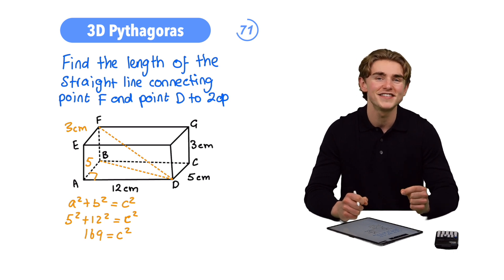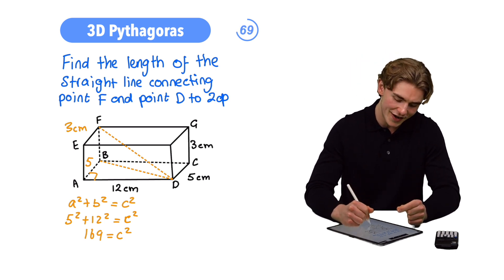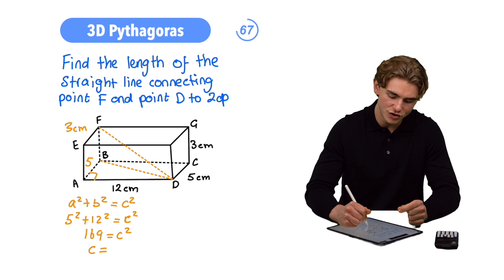Now, we can square root both sides. C is going to be the square root of 169. C is going to be equal, therefore, to 13.